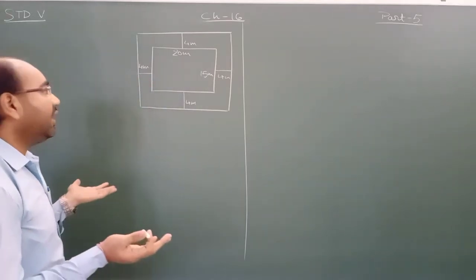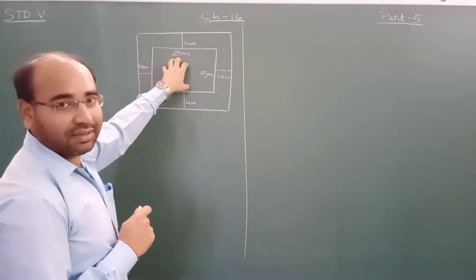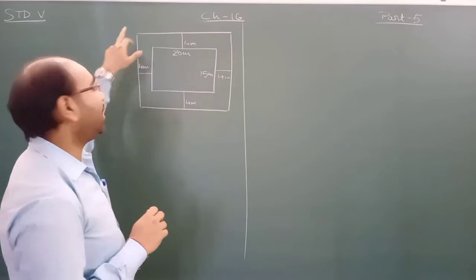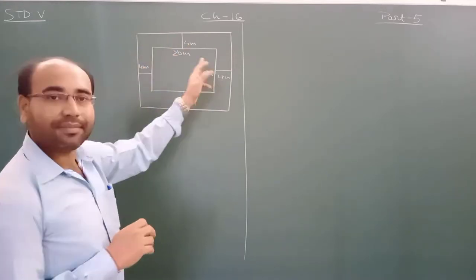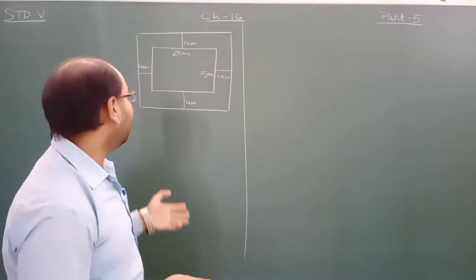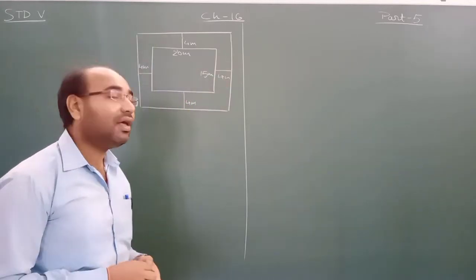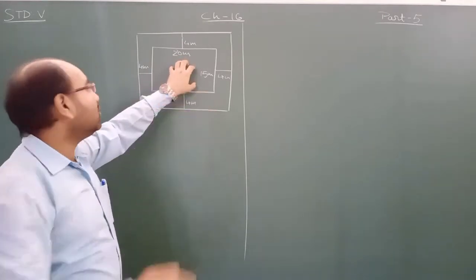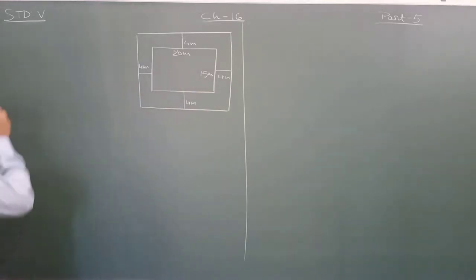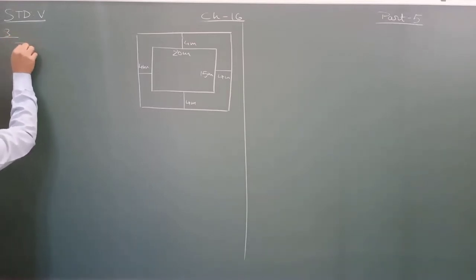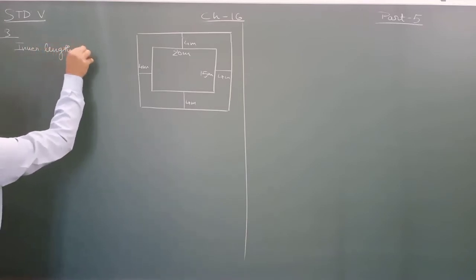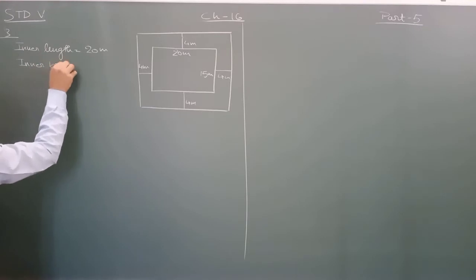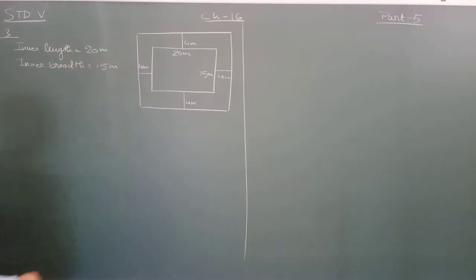The veranda is on the outside and the hall is 20 meter long and 15 meter broad as given. The veranda is 4 meter broad on all four sides of the hall. Now we have to find the area of the veranda. The measurement of the inside — the hall — is what we start with. So we write: inner length is equal to 20 meters, inner breadth is equal to 15 meters.